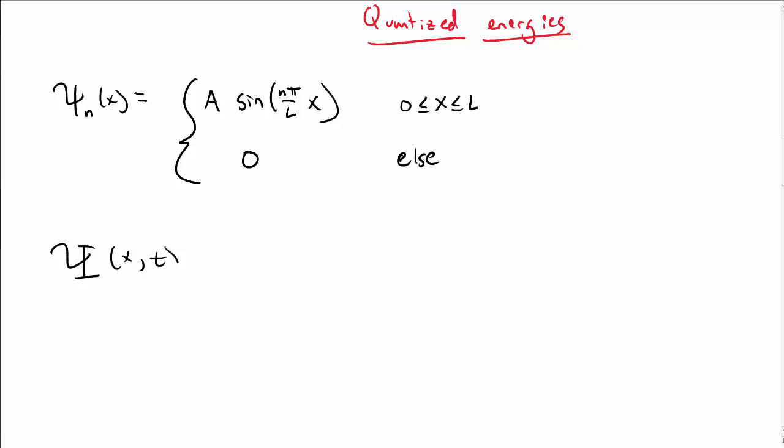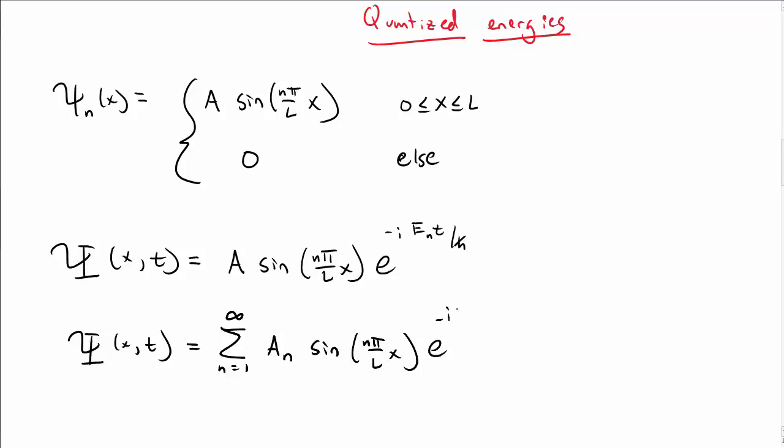Okay, so capital Ψ(x,t), the full wave function, is A sin(nπx/L) times e to the minus i E_n t over h-bar. A more general solution is to take a sum over all possible n values with coefficients A_n depending on n. So we'll take any of those wave functions and add them up. This E_n is the same E_n we had before: h-bar squared n squared π squared over 2m L squared.